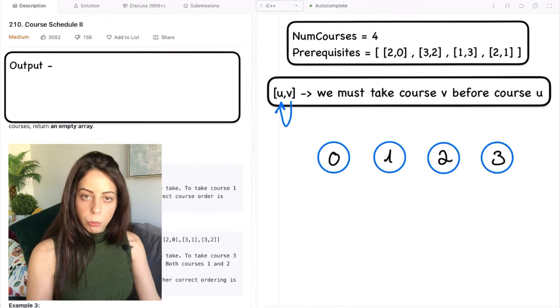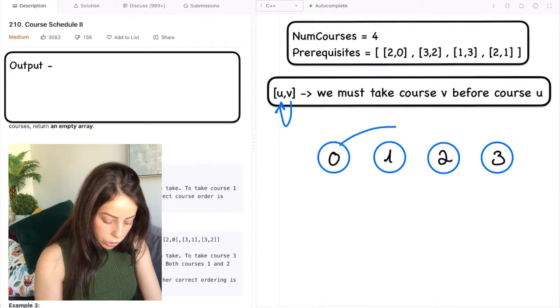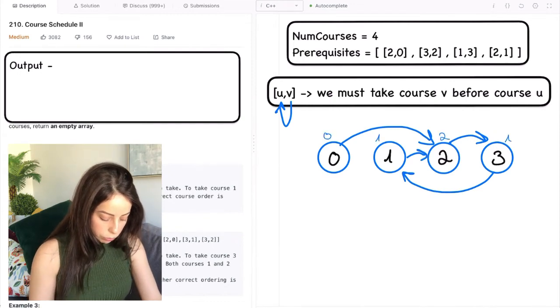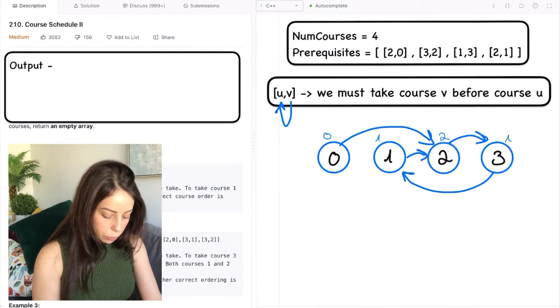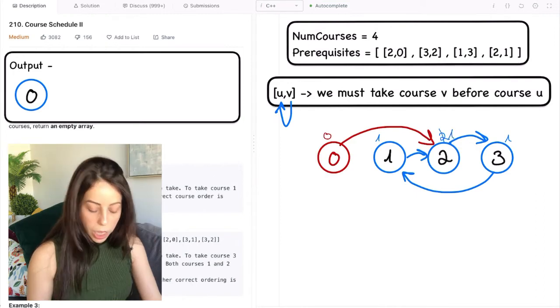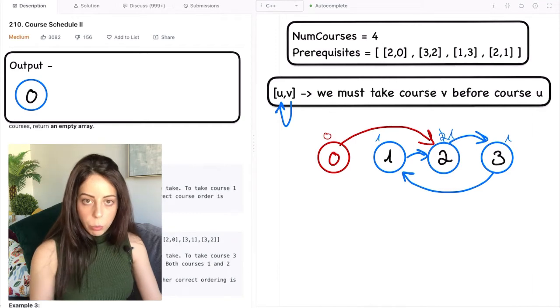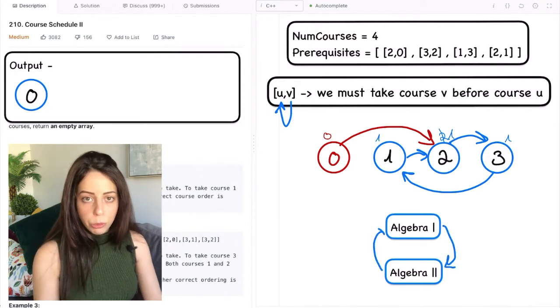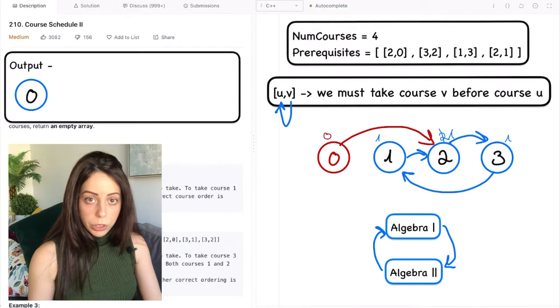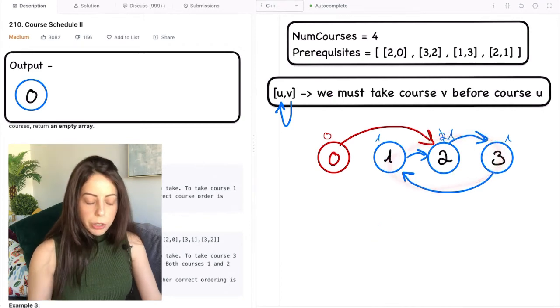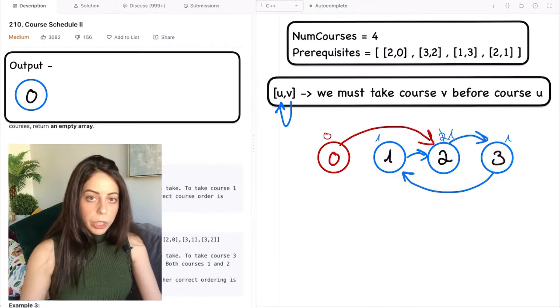Now you might be asking yourself, what if at some point we had no nodes with 0 in degrees? What would we do then? It's like in this example where we must take course 0 before course 2, 2 before 3, 3 before 1 and 1 before 2. And the only node with 0 in degree is node 0. So we add it to our schedule and we remove it from the graph. And now we have no nodes with 0 in degrees and nowhere to go. That means that there is no possible correct way to finish all the courses. Which makes sense because if I had to take Algebra 1 before Algebra 2 and Algebra 2 before Algebra 1, then I can't take either of them. We're stuck, right? In a graph, it will be represented as a cycle. So if our graph contains a cycle like this one, it means that there is no possible way to finish the courses and we need to return an empty array.